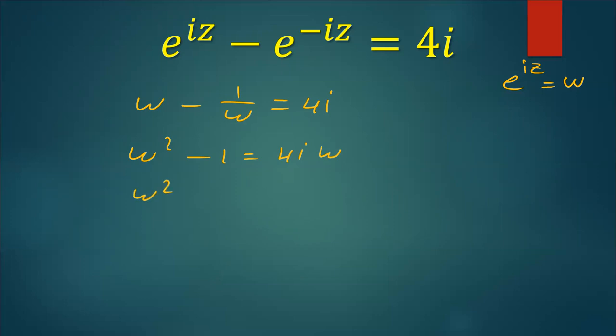In appropriate order of terms, so it will be w² - 4iw - 1 = 0. Of course I'm going to use the formula. I cannot factorize that by myself. So the formula is saying that w equals (-b ± √(b² - 4ac)) / 2a.